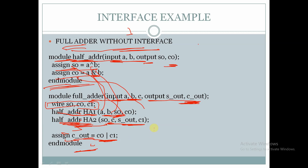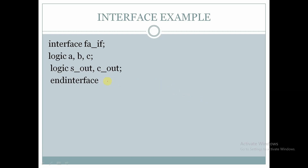This is the code of a full adder using the half adder. Now for the full adder using the interface: here we have declared the interface fa_if and we are declaring the signals a, b, c as logic type and s_out and c_out also as logic type, and here we are ending the interface.